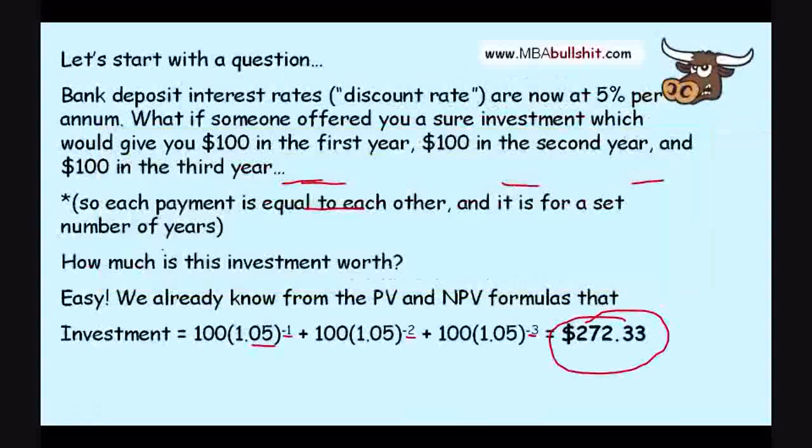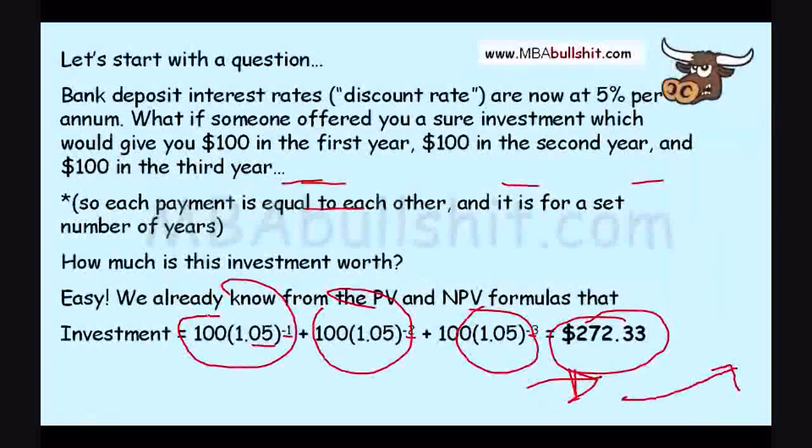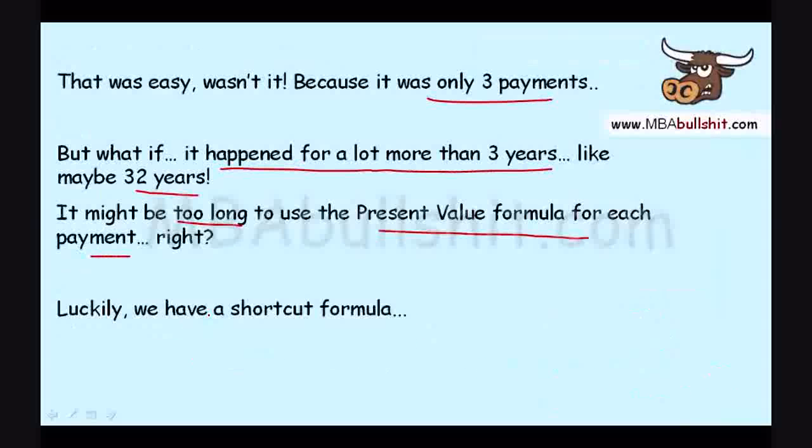Imagine if we had to write down this plus this plus this for 32 years all the way there and continuing and continuing. That would take way too long. So, luckily, we have a shortcut formula and it looks like this.